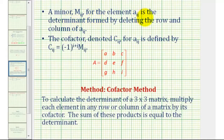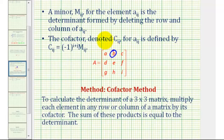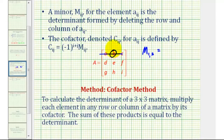First, the minor of any element is a determinant formed by deleting the row and column of that specific element. So for example, if we consider the element in row one, column two, its minor, or M sub one comma two, is equal to the determinant formed by deleting that row and column. Eliminating row one and column two leaves four elements, so the two by two determinant has elements d, f, g, i.